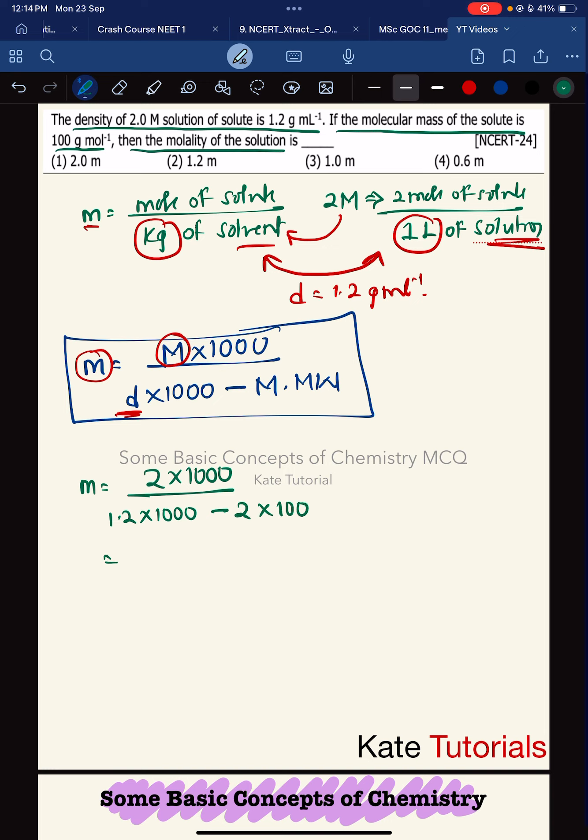If I solve, it is 2000 divided by 1200 minus 200, that is nothing but 2000 divided by 1000, so I get 2 molal.